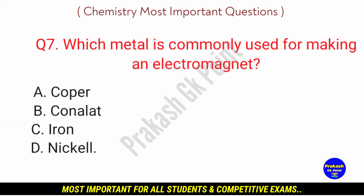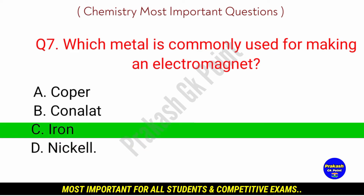Which metal is commonly used for making an electromagnet? Answer: option C, Iron.